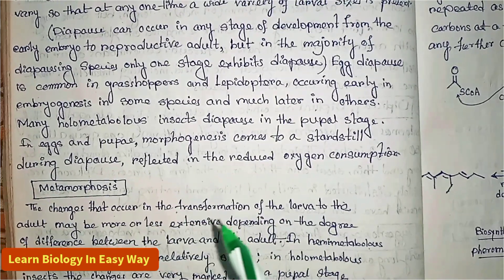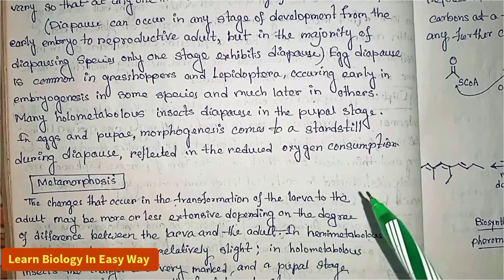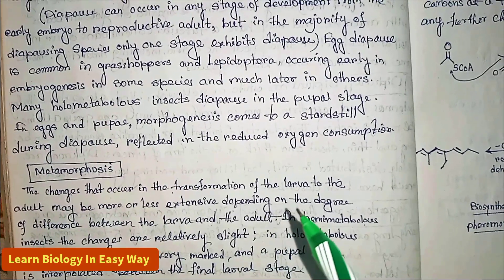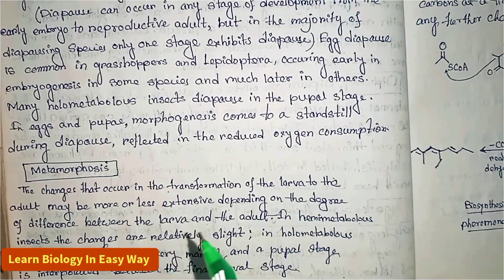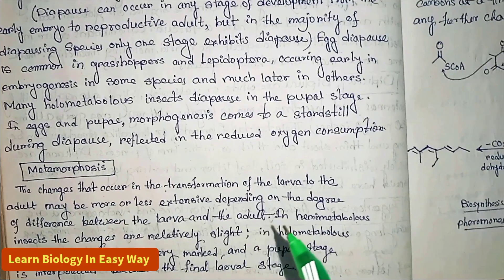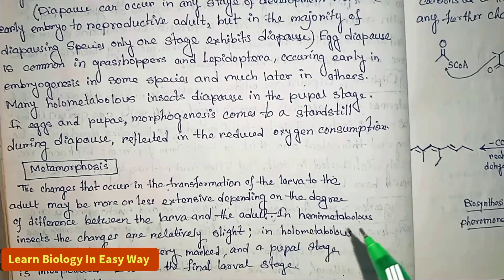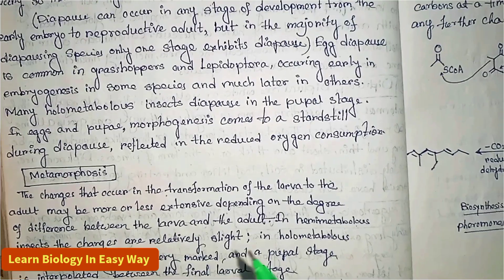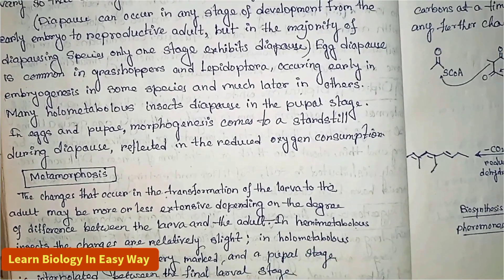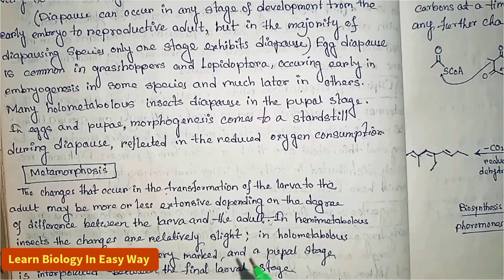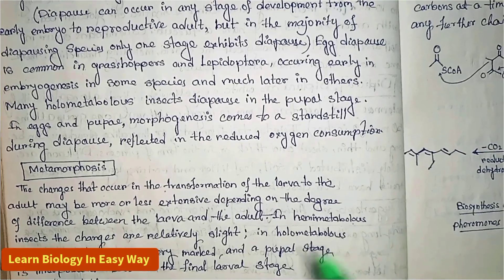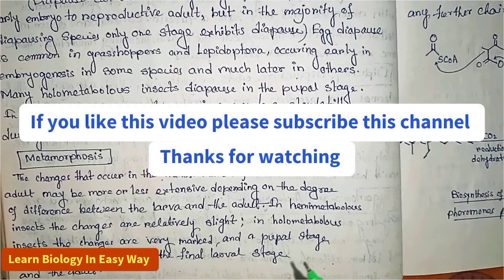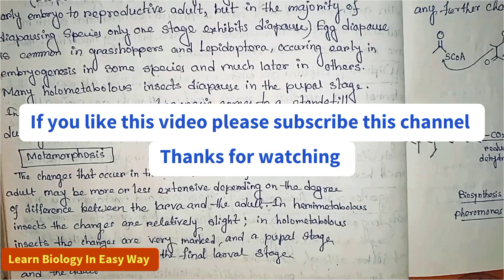Next, metamorphosis. The changes that occur in the transformation of the larva to the adult may be more or less extensive, depending on the degree of difference between the larva and the adult. In hemimetabolous insects the changes are relatively slight. In holometabolous insects the changes are very marked, and a pupal stage is interpolated between the final larval stage and the adult. Thank you.